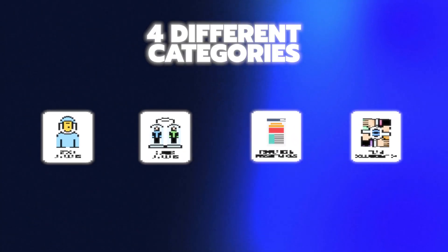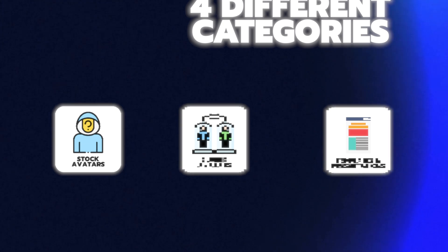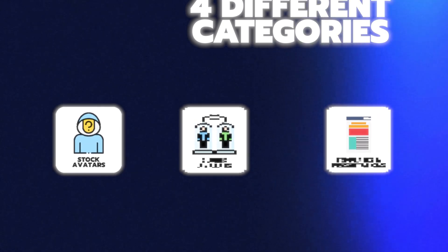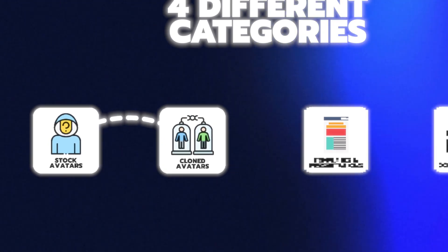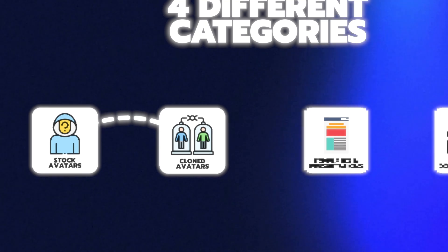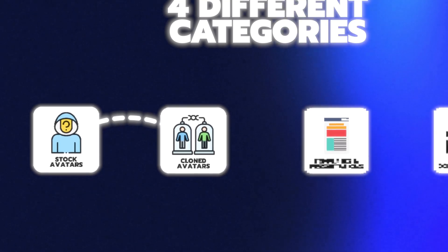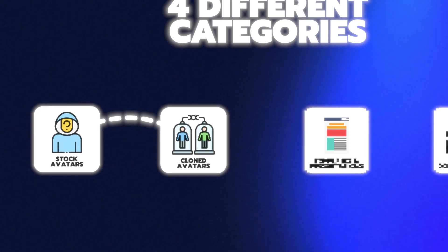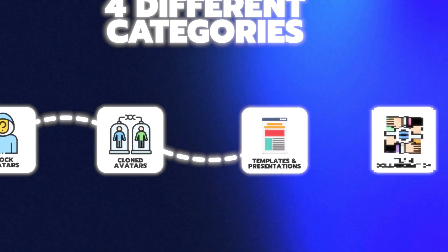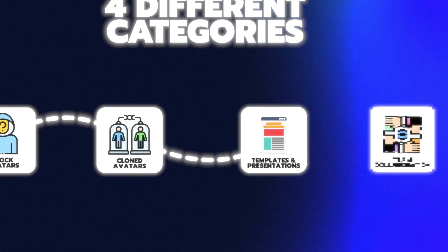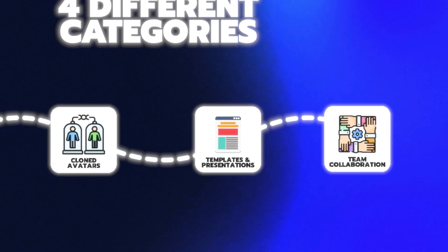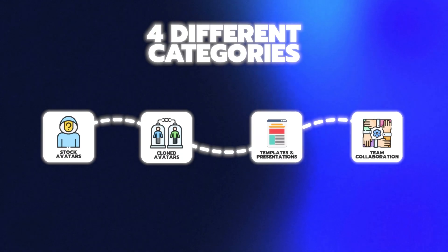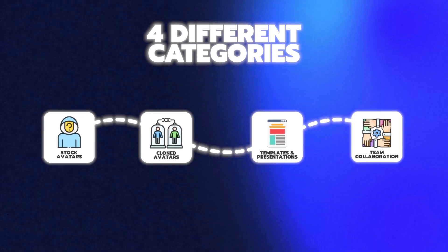In this video, we're going to be going over four different categories to judge these platforms on. First, we'll go over stock avatars and judge the emotions and the process to create an avatar. Second, we'll go over cloned avatars and how real they actually look — basically the ability to clone yourself and make an AI-generated version of yourself. We'll also go over templates and presentations, judging quality of output and ease of use. Lastly, we'll go over team collaboration — how easy it is to edit these videos with your team.